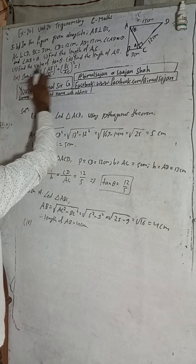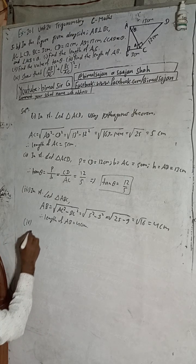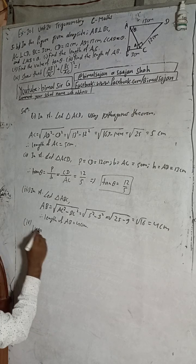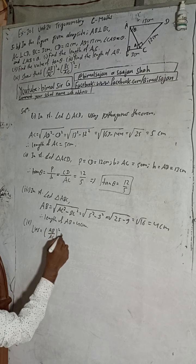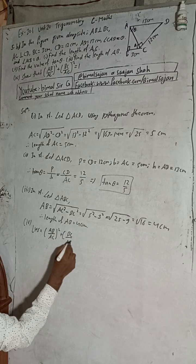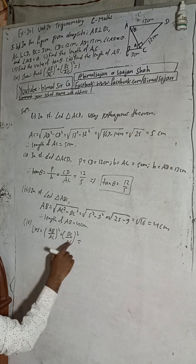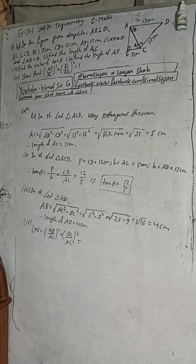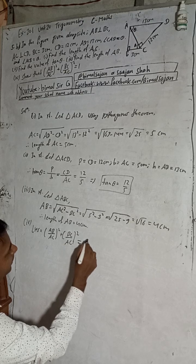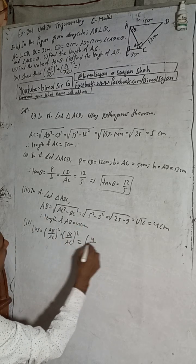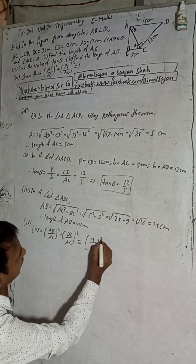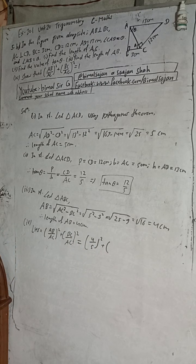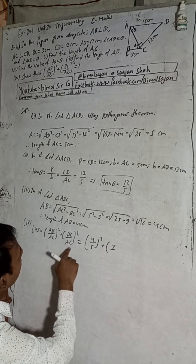Now part 4: the LHS is AB by AC whole square plus BC by AC whole square. AB value is 4cm and AC is 5, so 4 by 5 whole square plus BC is 3 by AC which is 5. This is 16 by 25 plus 9 by 25.